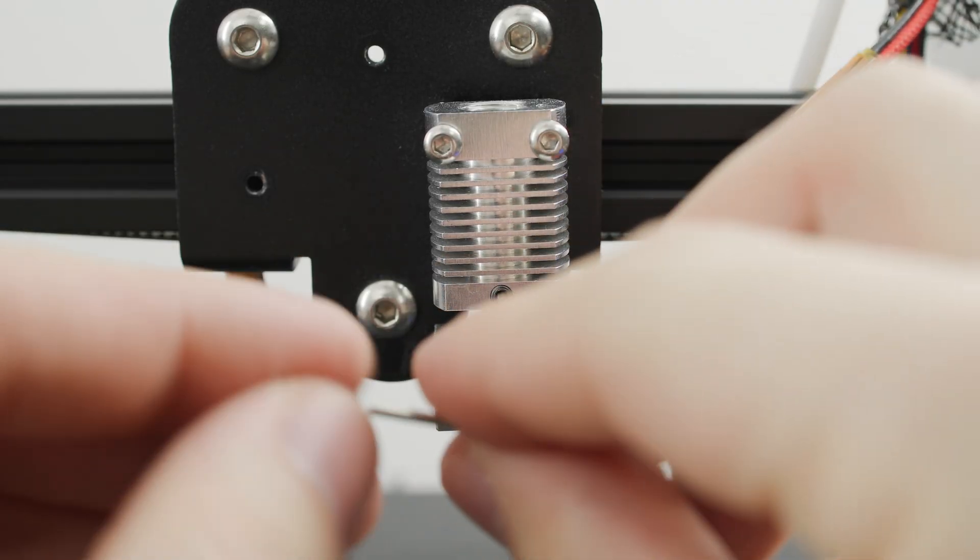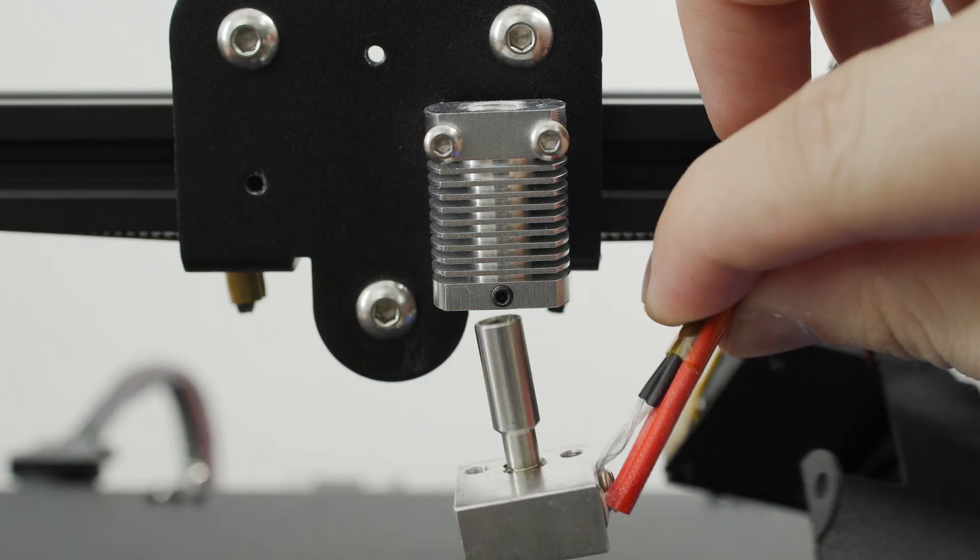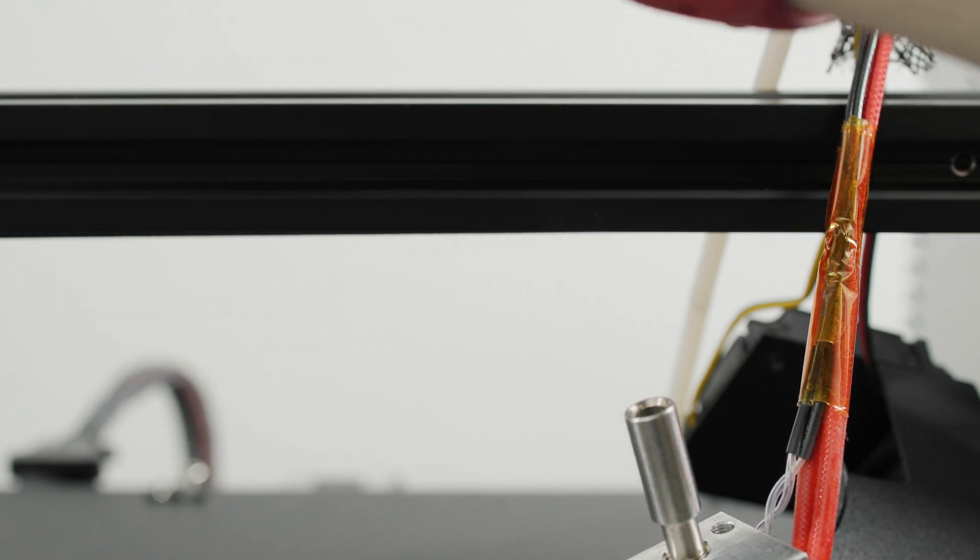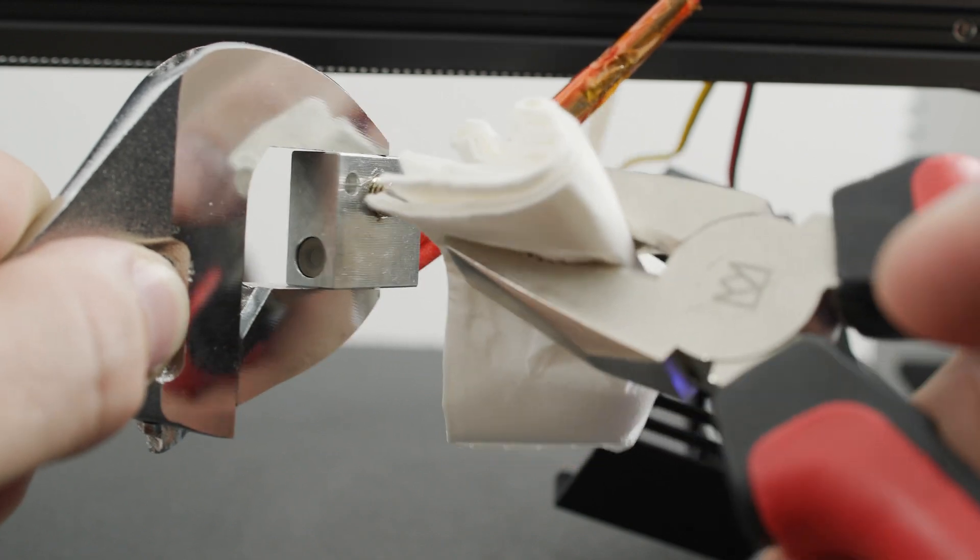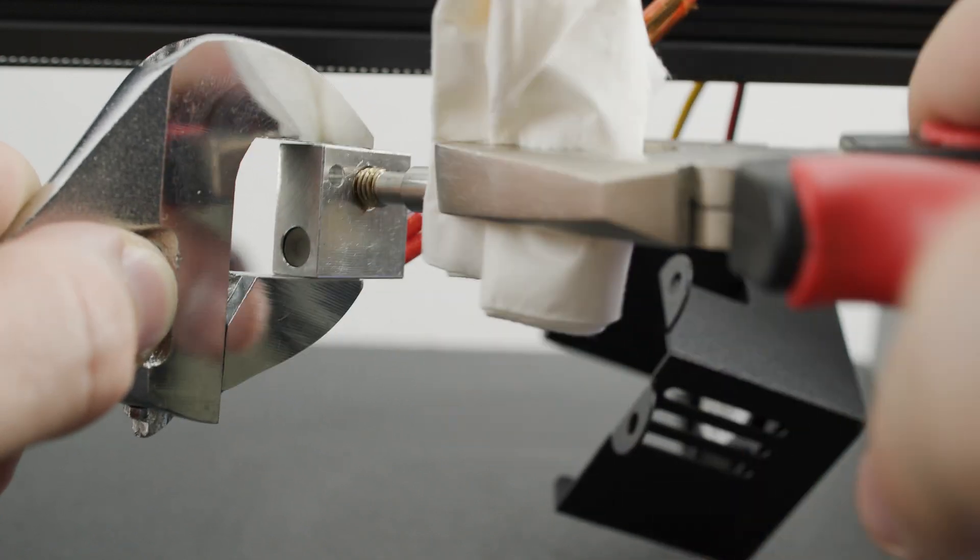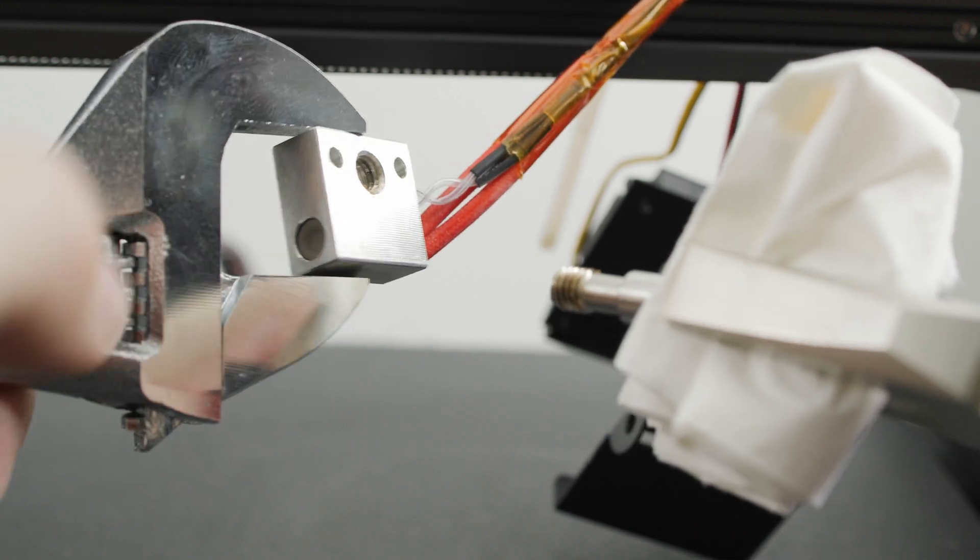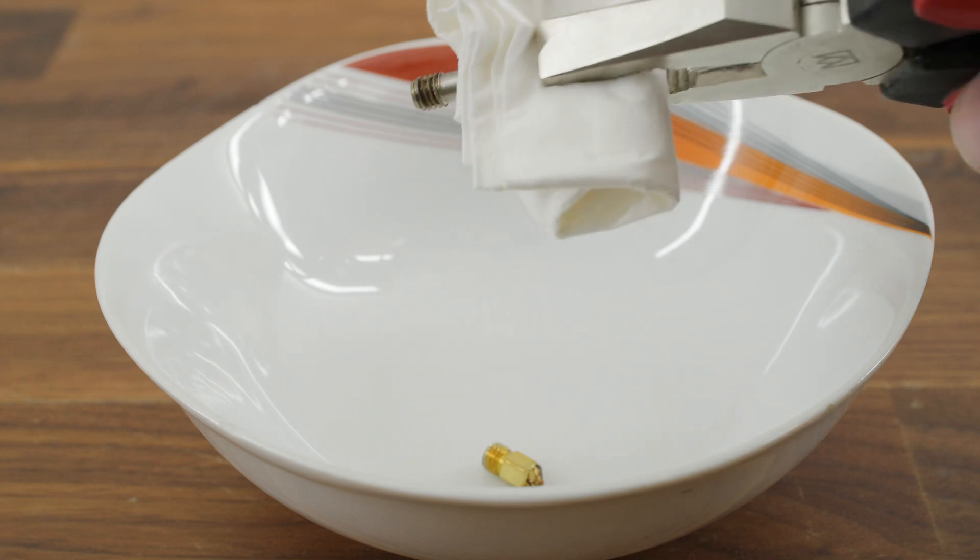Now loosen this worm and pull the bottom of the hotend out of the heatsink. Do everything very carefully. The heat block is still very hot. Now you need to unscrew this heat brake from the heat block. An adjustable wrench and ordinary pliers with a paper towel should be fine for this. The paper towel is used to protect the heat brake from scratching.